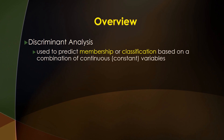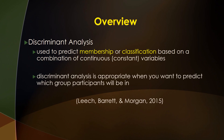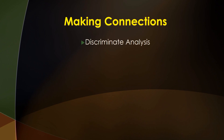Discriminant analysis is used to predict membership or classification based on a combination of continuous variables. According to the authors, discriminant analysis is appropriate when you want to predict which group participants will be in. It is also important to note that the sample size should exceed the number of variables, and it is suggested that the sample size be 20 for each variable. In discriminant analysis, you are essentially discriminating against something, or grouping them based on variables or other features.